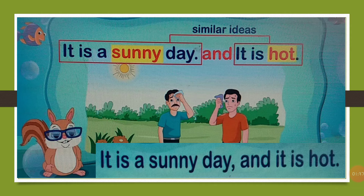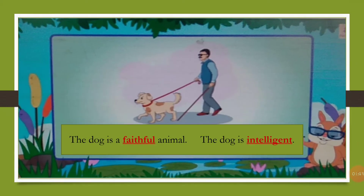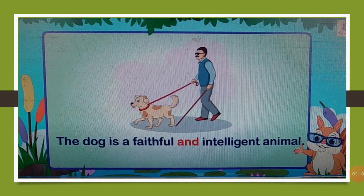So these sentences will be joined with the conjunction 'and' in this way: 'It is a sunny day and it is hot.' Now look at this example: 'The dog is a faithful animal. The dog is intelligent.' Here are two similar ideas about a dog — faithful and intelligent. So we can join these small sentences with the joining word 'and'. We use the conjunction 'and' to join similar ideas to make a long sentence.